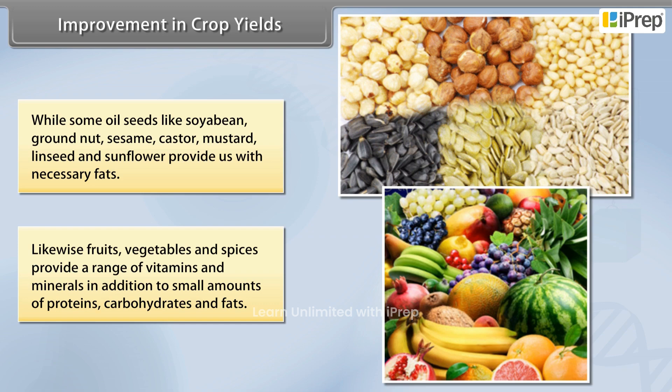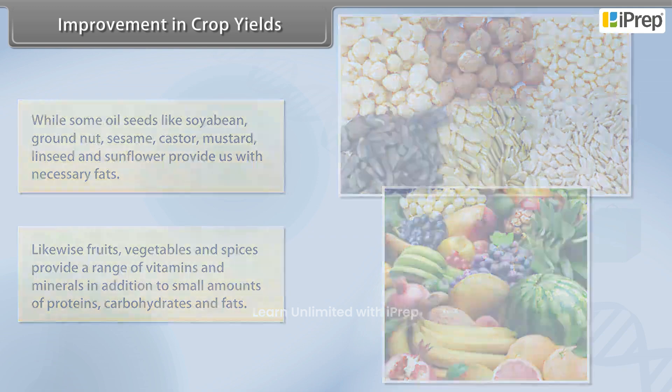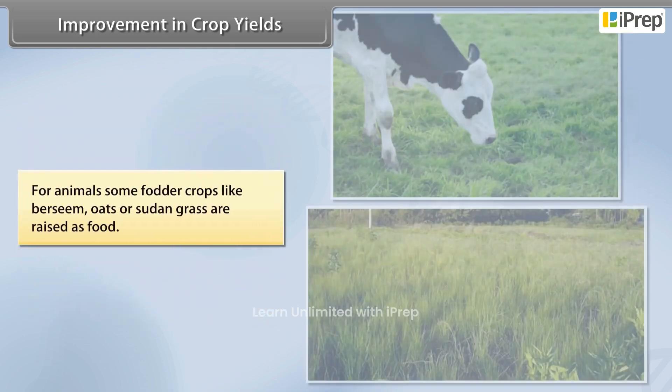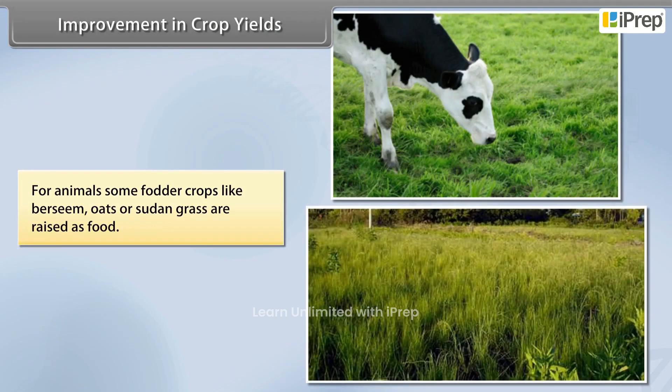For animals, some fodder crops like berseem, oats, or Sudan grass are raised as food.